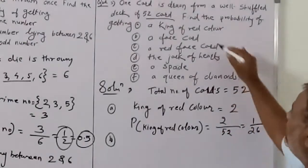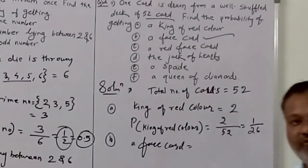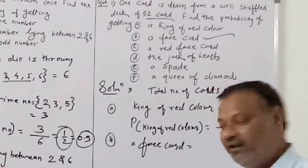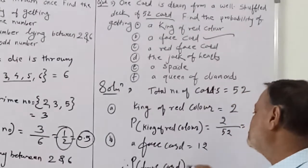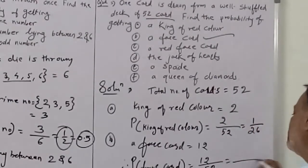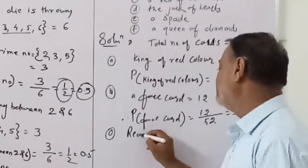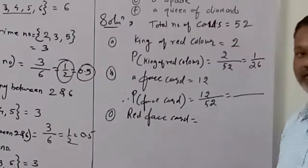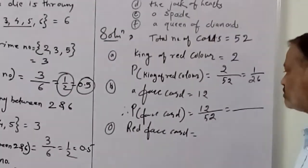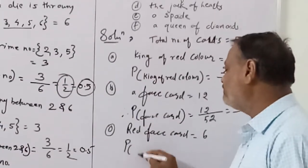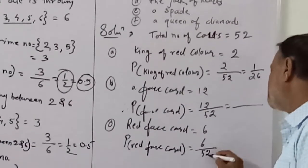Part B: a face card. Each suit has 3 face cards (J, Q, K), and there are 4 suits, so total face cards = 12. Therefore probability of face card = 12/52. You can calculate the simplified answer. Part C: a red face card. Each red suit (heart and diamond) has 3 face cards, so 3 + 3 = 6 red face cards. Probability of red face card = 6/52.